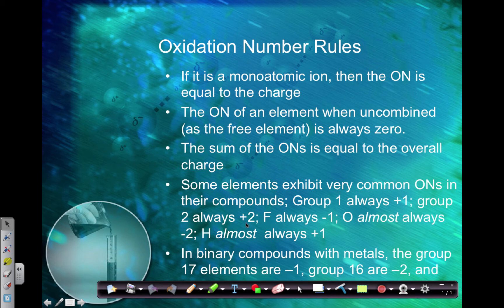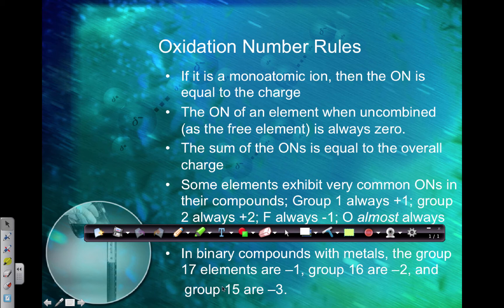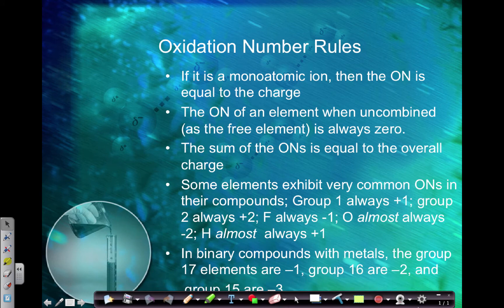Group one will always have a plus one. Hydrogen is in group one — it's almost always positive one. Group two is always plus two. F is always minus one. O is almost always negative two. In a binary compound with a metal: group 17 elements (7A) will be negative one; group 16 (6A) will be negative two; group 15 (5A) will be negative three. A lot of these are very similar to how you figure out the charge.